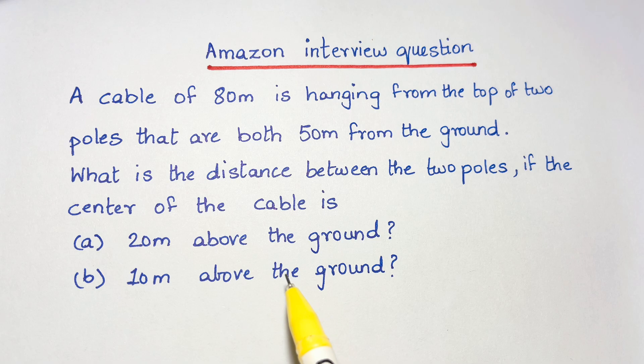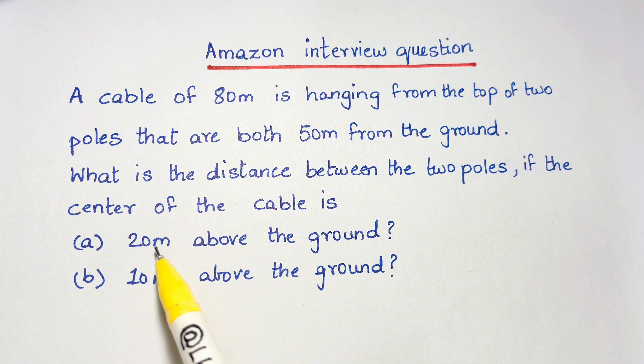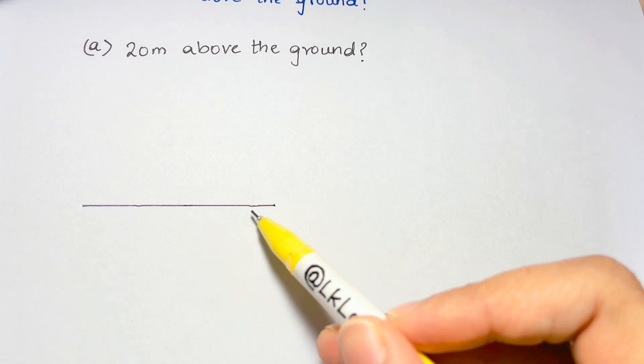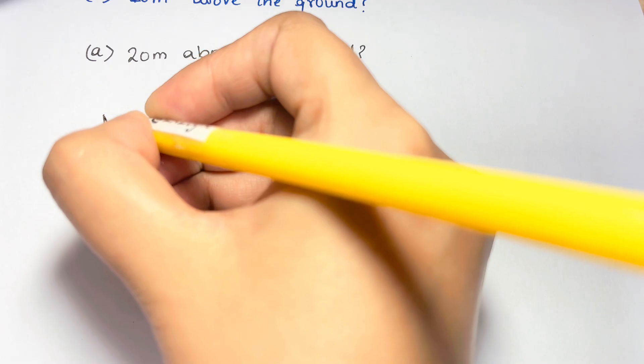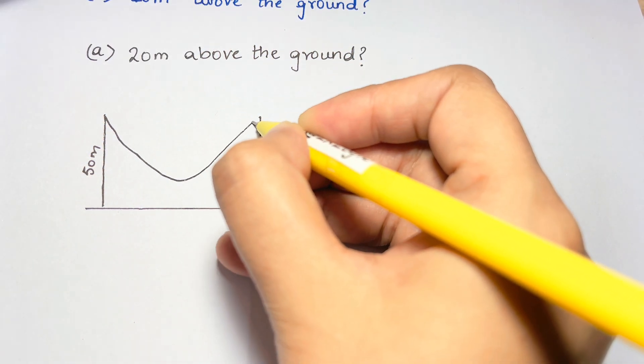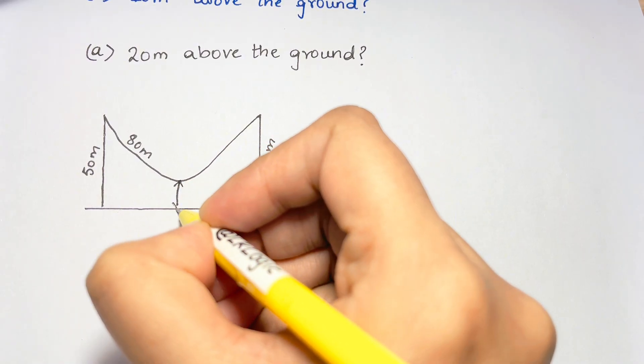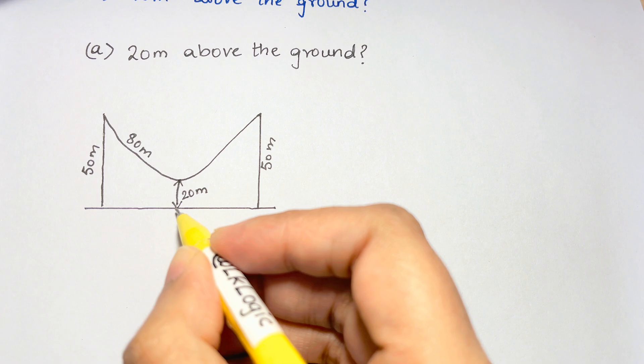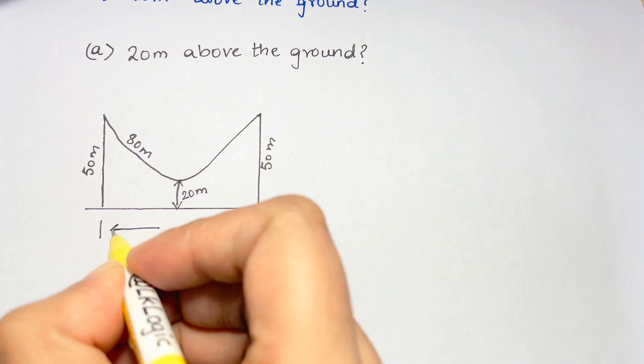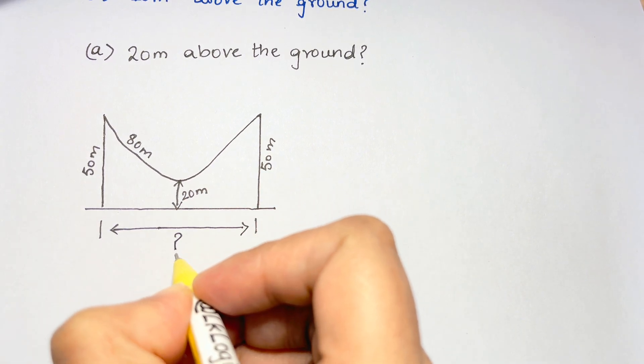So let's solve the case of 20 meters above the ground. We have the ground, we have two poles of 50 meters each, and we have a hanging cable that's 80 meters long. The center of this cable is 20 meters from the ground and we want to solve for the distance between the two poles.